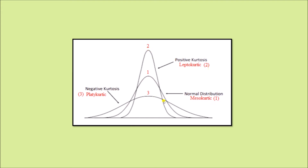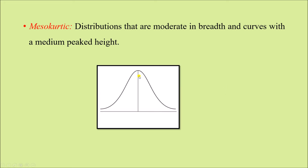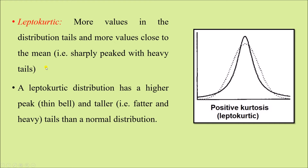Curve number two is also a normal curve but it is very tall and narrower, and its tail ends much earlier compared to the mesokurtic curve. The platykurtic curve is very wide but very short in height. Mesokurtic distribution is moderate in breadth with a medium-peaked height — the usual normal curve. Leptokurtic curves are those which are very tall.